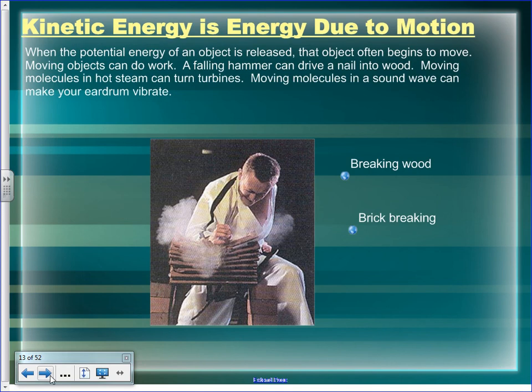When you release potential energy, it turns into kinetic, and then the kinetic can do work. A falling hammer can drive a nail into wood; any moving object can do work. Moving molecules in hot steam can turn turbines. Moving air — in a tornado at over 150 km/h — can pick up and throw really big things. The faster something moves, the more work it can do.